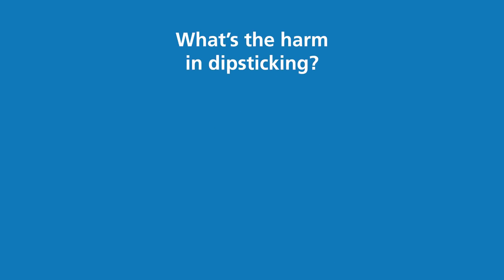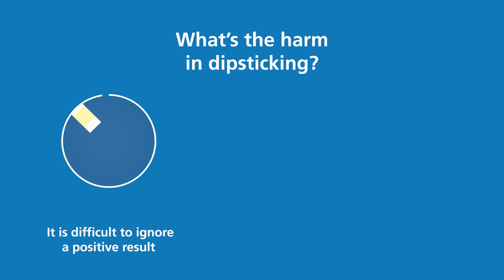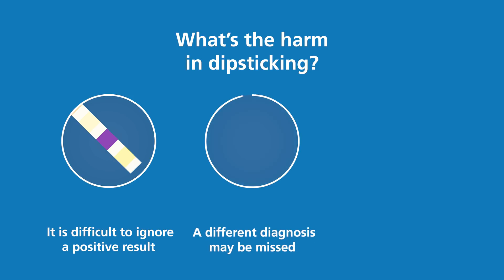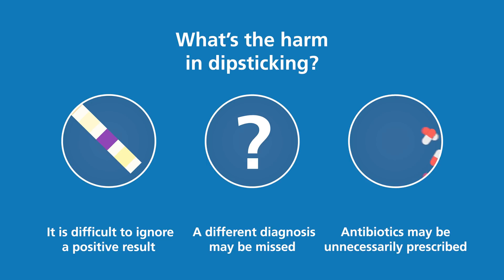But what's the harm in dipsticking? It is very difficult to ignore a positive result, even if it doesn't mean very much at all. It can be difficult to assess older people, for example if they are confused, and relying on the urine dipstick result in this setting may result in another diagnosis being missed. It can also trigger antibiotics being prescribed.